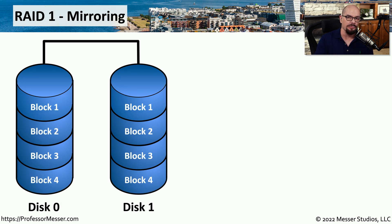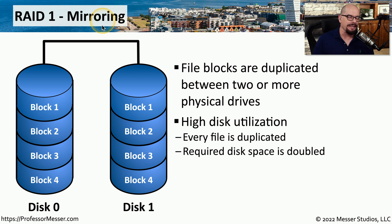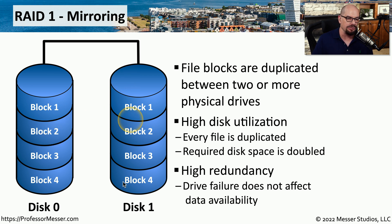RAID 1 looks very similar to RAID 0 in its structure — there is a disk 0 and a disk 1. But with RAID 1, we are duplicating data between both drives, so each drive is effectively a mirror image of the other. That's why we refer to RAID 1 as mirroring. We are using twice as much drive space as we would with RAID 0, because we are duplicating every single drive. But on the plus side, if we lose either of these physical disks, our data remains available because we have an exact duplicate on the other disk. It's not uncommon when working with a RAID array to lose a drive and not even realize it until you receive an alert or message that the drive has failed.